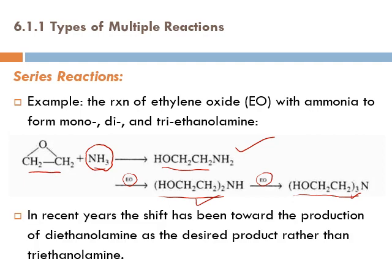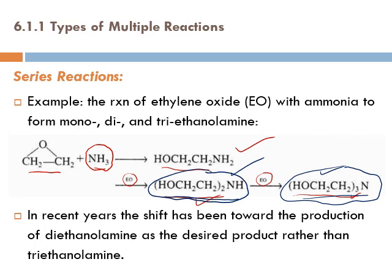In recent years, the shift has been toward the production of diethanolamine as the desired product rather than triethanolamine. The factory had to produce more of this product rather than the other. Did they decide to close the factory because there was no market for the original product? No — they had to introduce changes in order to produce more of it now. This is the role of chemical engineers: they know how to manipulate operating conditions to maximize the production of one product.